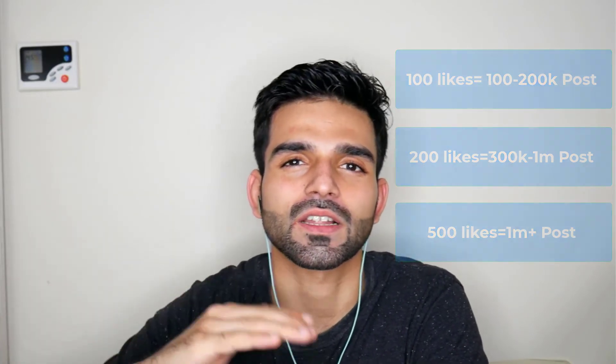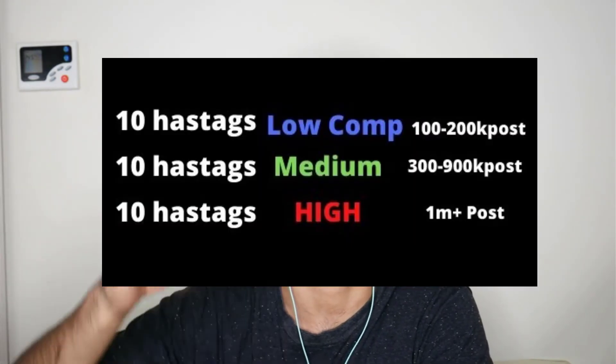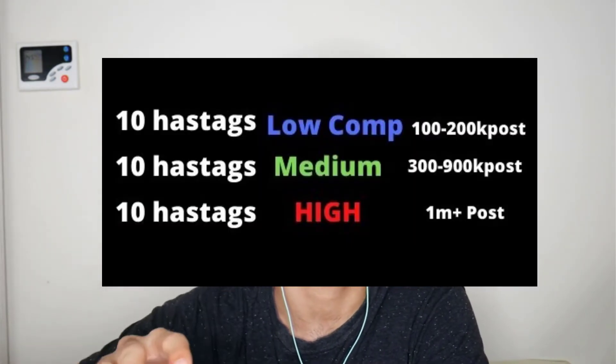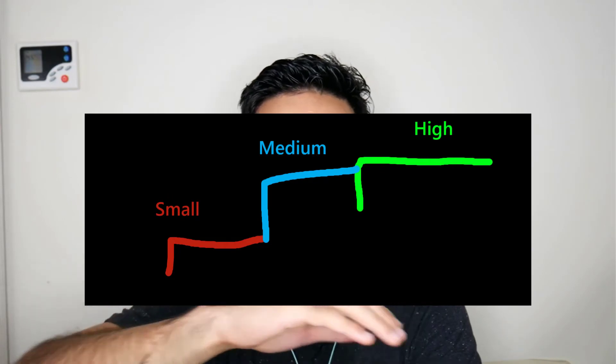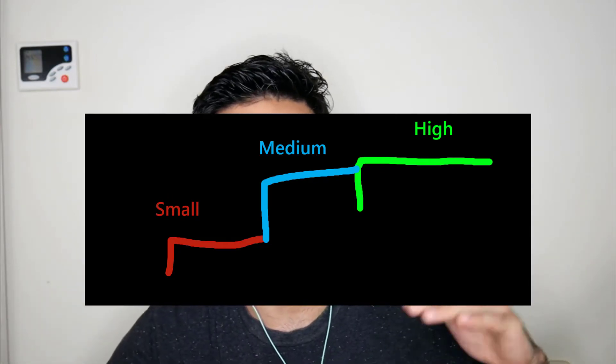The strategy I use is called the ladder or snowball strategy: use 10 low-competition hashtags, 10 medium-competition, and 10 high-competition. Once your post starts ranking on the low-competition hashtags, it pushes those likes toward the medium and high-competition ones, making it much easier for your post to go viral.